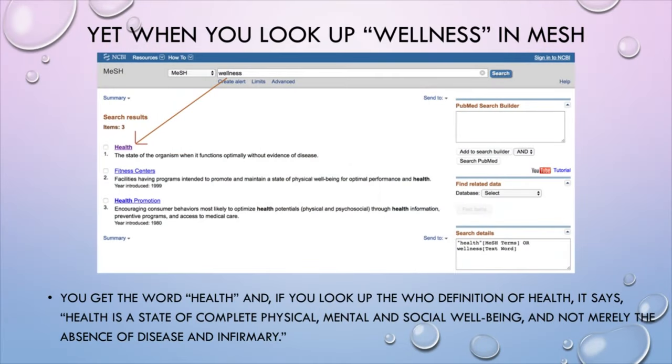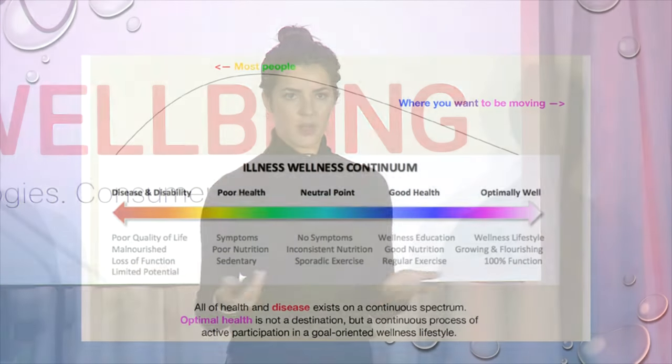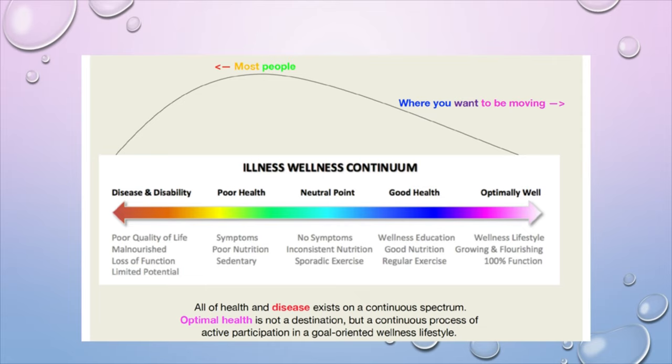When I go to PubMed and search for "wellness," I get the word "health." According to the WHO, health is a state of complete physical, mental, and social well-being — not merely the absence of disease and infirmity. So why are we calling it a healthcare system? I'm a doctor, so I can honestly say this. I started studying the illness-wellness continuum because something was majorly missing from my medical education — I was taught about disease but rarely about optimizing health. All health and disease exist on a continuous spectrum, and optimal health is not a destination but a continuous process of active participation in a goal-oriented wellness lifestyle. Yet most people are moving in the opposite direction of health.